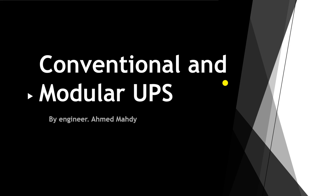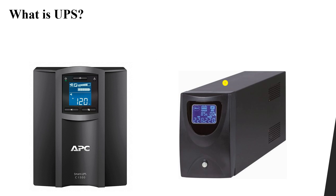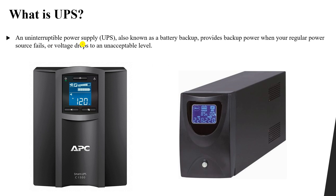Welcome to this lesson about UPS. We discussed the concept of UPS and its types in a previous lesson. Now we would like to understand the difference between a conventional UPS and a modular UPS. A UPS is an abbreviation for uninterruptible power supply, also known as a battery backup. It provides backup power when your regular power source fails or the voltage drops to an unacceptable level.